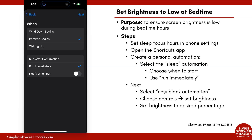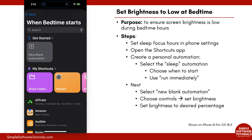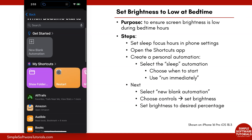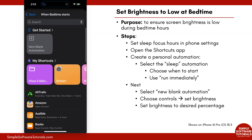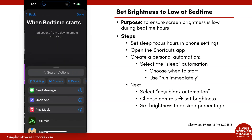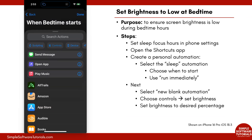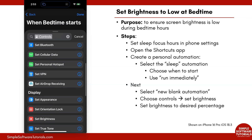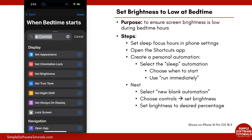If all this looks good, tap Next in the top right corner. Now we tell it what to do — we told it when, now we need to tell it what. Under Get Started, tap on New Blank Automation. From here, you can search for brightness, or it can be found under Controls. Tap on Controls, then scroll down to Display and choose Set Brightness.